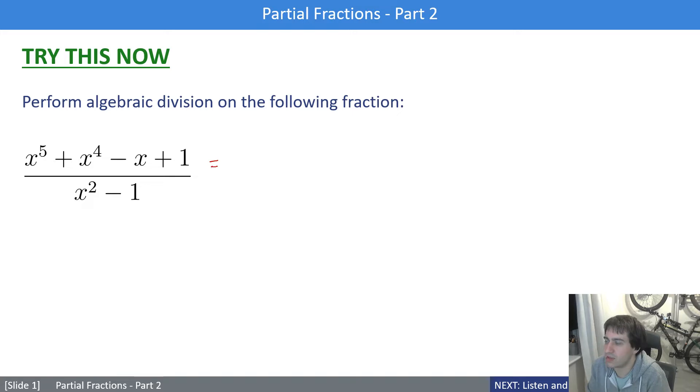Okay, let's see if we can just follow along. Feel free to skip ahead to the answer if you've successfully done it. We're going to have x^5 + x^4 + 0x^3 + 0x^2 - x + 1, and I'm going to divide that all by x^2 + 0x - 1.